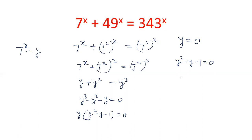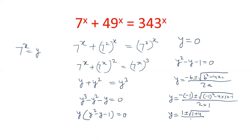Now, there is a quadratic equation. To solve the quadratic equation, we can apply that formula minus b plus minus under root b squared minus 4ac upon 2a. Where b is minus 1, a is 1, c is minus 1. So y equals 1 plus minus under root 5 upon 2.